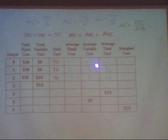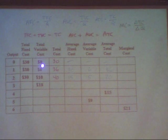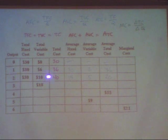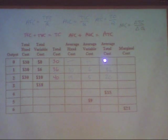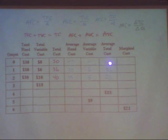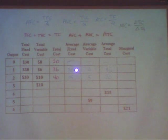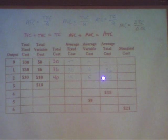To figure out the average variable cost, the formula is the total variable cost divided by the quantity: 6 divided by 1 is 6, and 10 divided by 2 is 5. The average total cost is the total cost divided by the quantity: 30 divided by zero is undefined, 36 divided by 1 is 36, 40 divided by 2 is 20. Also, average fixed cost plus average variable cost equals average total cost — you can see that: 30 plus 6 equals 36, and 15 plus 5 equals 20.